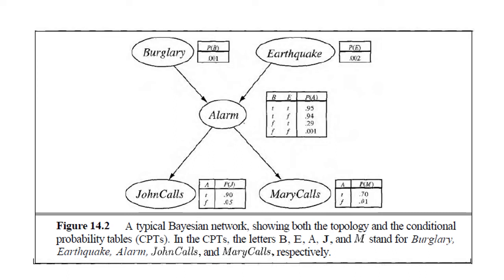John always calls when he hears the alarm but sometimes confuses the telephone ringing with the alarm. Mary, on the other hand, likes loud music and sometimes misses the alarm altogether. Given the evidence of who has or has not called, we estimate the probability of a burglary. This is the Bayesian network for the example — each node has its own conditional probability table (CPT).